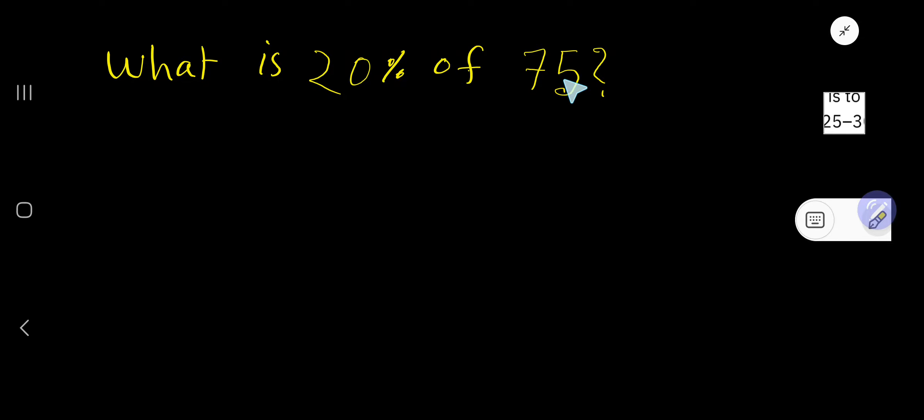What is 20% of 75? Let's see. What means X, is means equal sign, then 20% of means multiplication sign, then 75. Just rewrite it: 20 times percent means 1 over 100, times 75. Just cancel the zero with the zero.